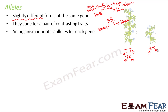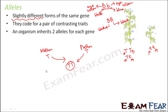An organism inherits two alleles for each gene — one allele from the paternal side and one allele from the maternal side. For example, if the mother contributes capital T and the father contributes capital T, the offspring will have capital T capital T. Similarly, if the mother contributes small t and the father contributes small t, they will combine to form small t small t. This is the concept of allele.